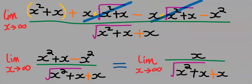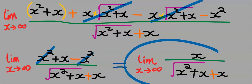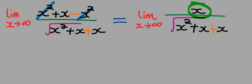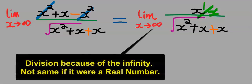Next, in the remaining function, x squared will take away minus x squared and we are left with this function. At the numerator, the highest power of x is one, hence I would divide this x with x.